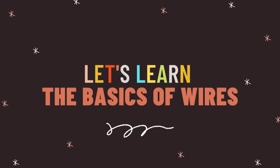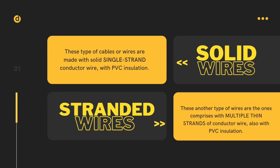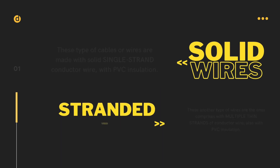Now let's learn the basics of wires. For solid wires, these type of cables are made with a solid, single-strand conductor wire with PVC insulation. And for stranded wires, these are the ones comprised with multiple thin strands of conductor wire, also with PVC insulation.